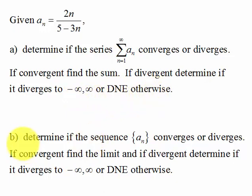And if we look at part B, we're also going to determine if the sequence converges or diverges. If it's convergent we're going to find the limit of the sequence, and if it's divergent we're going to determine if it diverges to negative infinity or if it does not exist otherwise.